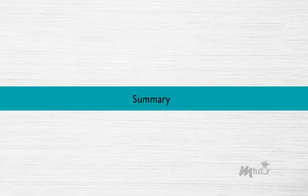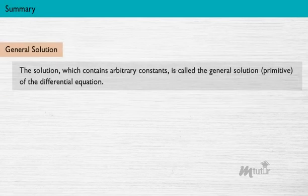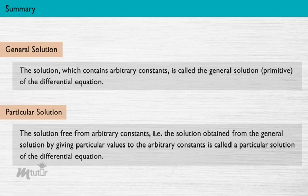Summary. In this lesson, we have learnt that the solution which contains arbitrary constants is called the general solution, or primitive, of the differential equation. And the solution free from arbitrary constants — that is, the solution obtained from the general solution by giving particular values to the arbitrary constants — is called a particular solution of the differential equation.